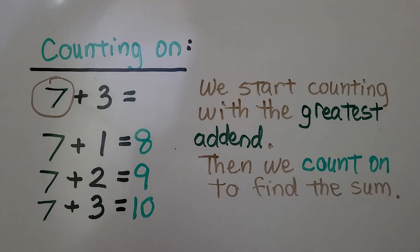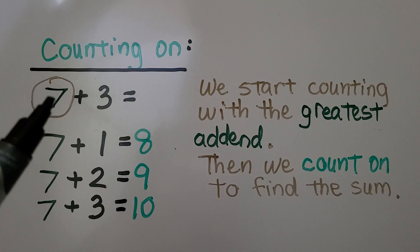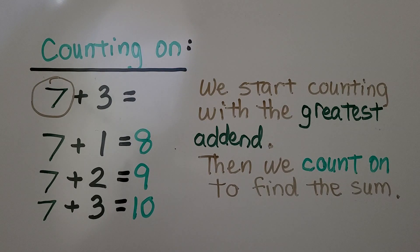Here we have 7 plus 3. For counting on, we start counting with the greatest addend, 7. Then we count on to find the sum.